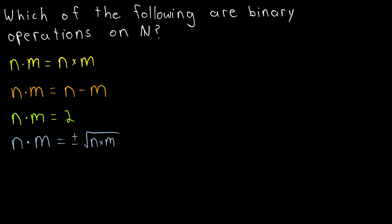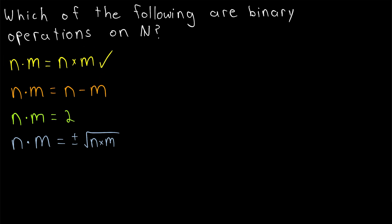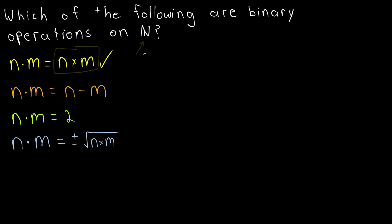In the first example, we're talking about the binary operation of multiplication. This is a binary operation on the natural numbers. For one, multiplication is a function — when we multiply two numbers, we get exactly one answer. Additionally, if we multiply two natural numbers, we will always get another natural number, so the natural numbers are closed under multiplication. Thus, multiplication over the naturals is a binary operation. If we take two natural numbers like 2 and 4, we get exactly one natural number — in this case, 8.